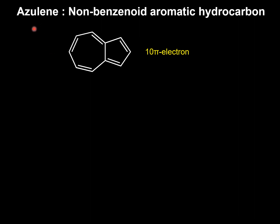Azulene is a non-benzenoid aromatic hydrocarbon. It is a blue-colored, stable solid. It is isomeric with naphthalene and contains a total of 10 pi electrons.